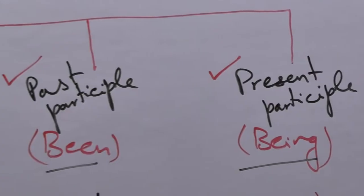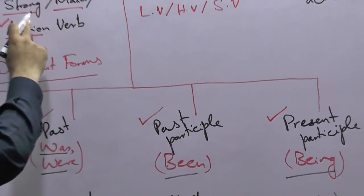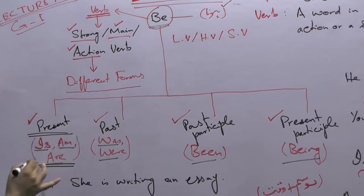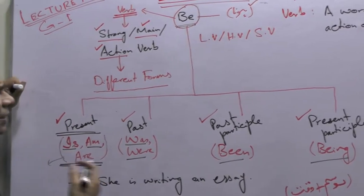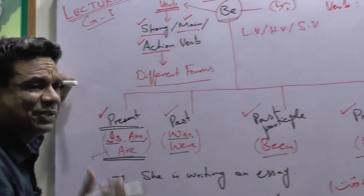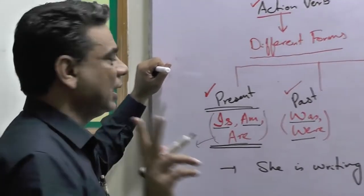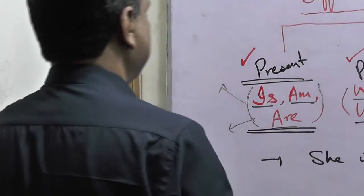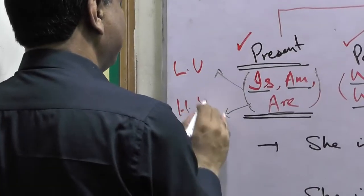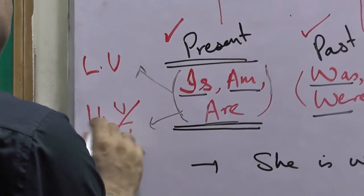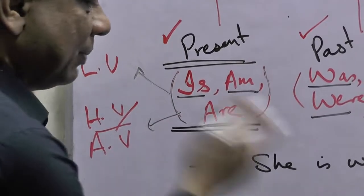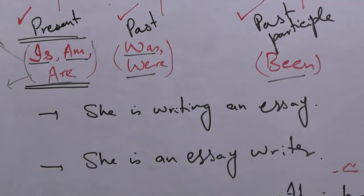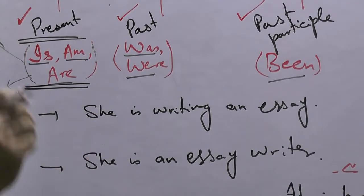Now, before going further — this verb has a dual role. Going further in classification, this situation emerges: is, am, are / was, were / been / being — what do we call these in parts of speech? They have a dual role. In one context they function as a linking verb, and in another as a helping verb or auxiliary verb. It depends on their use. Examples will clarify in which situation it acts as a helping verb and when it acts as a linking verb.